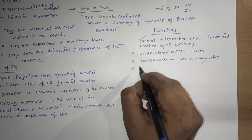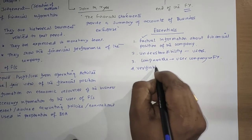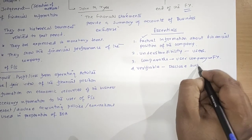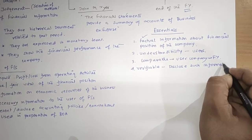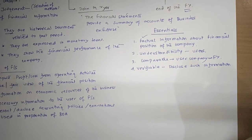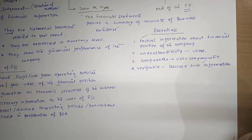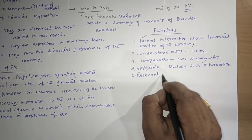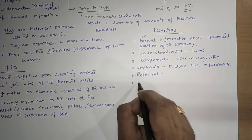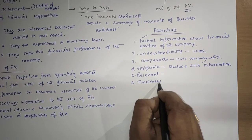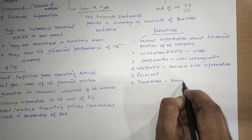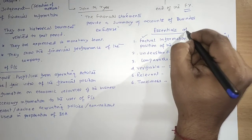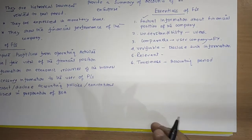Then it must be verifiable — it should not disclose information which is not verified from the company. Only authentic information should be disclosed by the auditor or accountant. Number five, it must be relevant — relevant information must be disclosed. And the most important one is timeliness — it should be disclosed within the end of the accounting period. These are the essentials of financial statements.